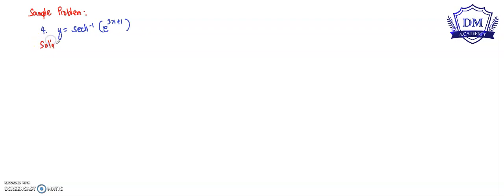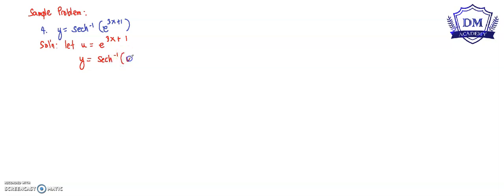Our solution for this is chain rule. Let u be equal to e raised to 3x plus 1. So our function of y now is equal to the inverse hyperbolic secant of u. The derivative of y with respect to x using chain rule is dy over du multiplied by du over dx.